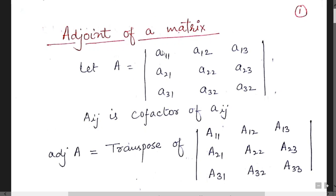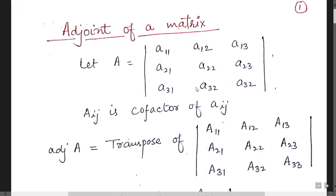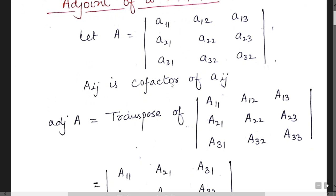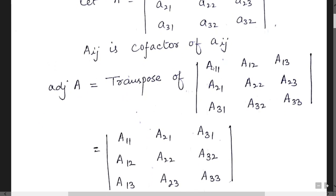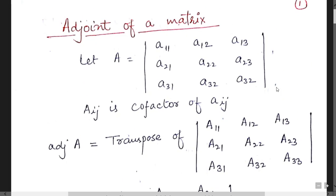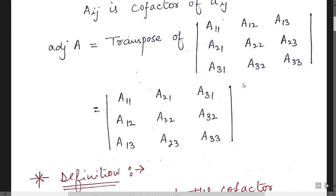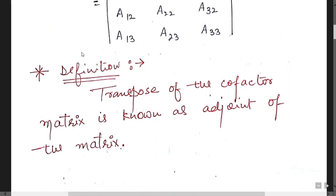Now, what is the meaning of adjoint of the matrix? Suppose aij is the cofactor of element aij — these are the values in the cofactor matrix. The adjoint of A is basically the transpose of the cofactor matrix. You have to convert the first row into the first column, second row into second column, and third row into third column. Find the cofactors of all elements of the square matrix, then take the transpose — that resulting matrix is known as the adjoint of A.